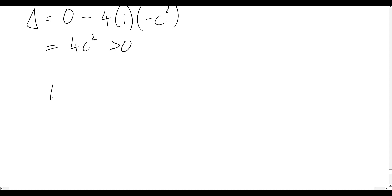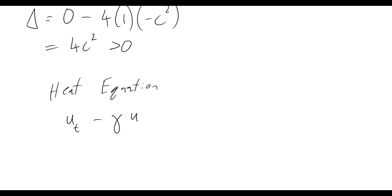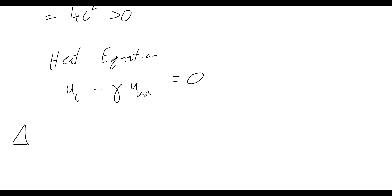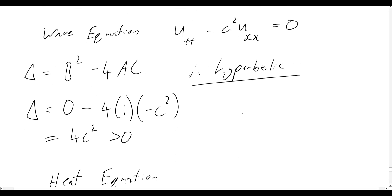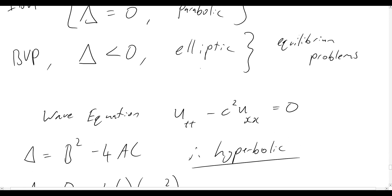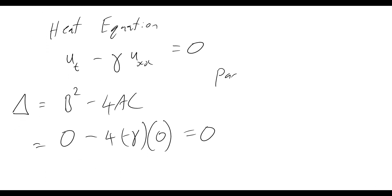The heat equation is: u_t − γ·u_xx = 0. Again, there is only one second order partial derivative, so b = 0. The discriminant = 0 − 4(−γ)(0) = 0, since there is no second variable's second order derivative, making the other factor zero. Since the discriminant equals zero, the heat equation is a parabolic PDE.